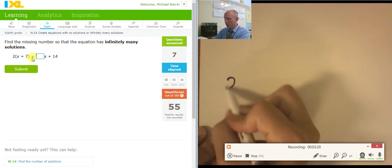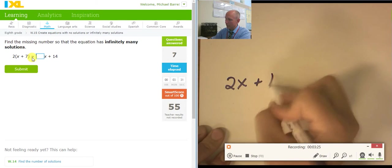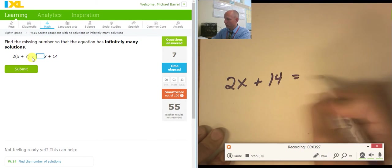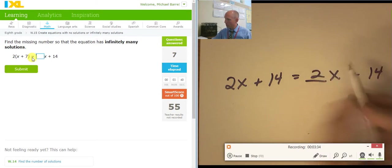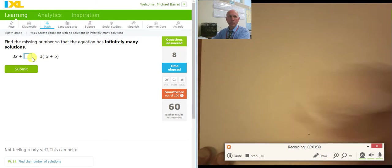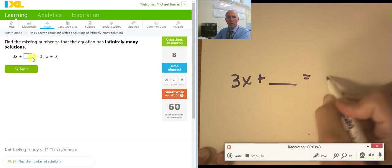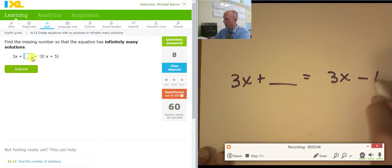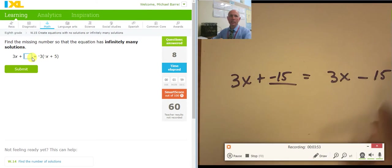So I have 2x plus 7. Ooh, not plus 7. 2x plus 14 equals blank x plus 14. I want infinite solutions. So I need to put a 2 right here. Then everything will cancel. 3x plus blank equals 3x minus 15. I did some distribution. Infinite solutions. So I need another negative 15 right there. Negative 15, negative 15. Everything cancels out.